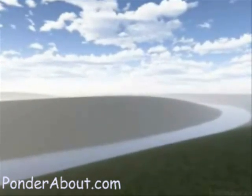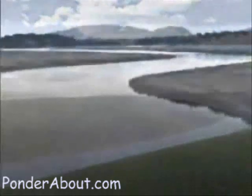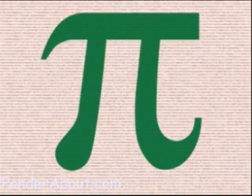It's not exactly clear why, but measure the actual length of a river, divide it by the distance from source to ocean as a crow flies, and the result is, on average, pi, 3.14.